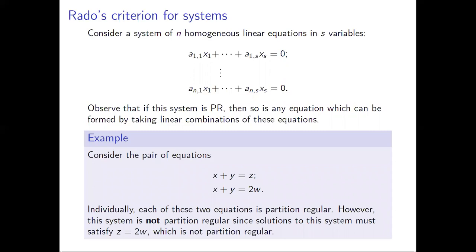To illustrate this, consider the pair of equations x+y=z and x+y=2w. Individually each is partition regular: the first comes from Schur's theorem, the second from Van der Waerden's theorem. However, if we subtract one equation from the other we get z=2w, and that's not partition regular. You can see this from Rado's theorem, but also by noting that you could color the odd numbers red, two times the odd numbers blue, four times the odd numbers red, and so on — that coloring has no monochromatic solutions to z=2w. So it's not enough to check each individual equation; we also have to check linear combinations.